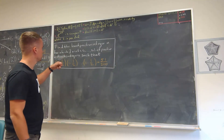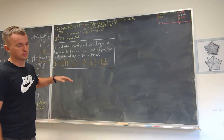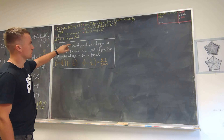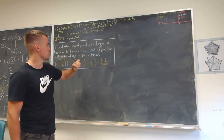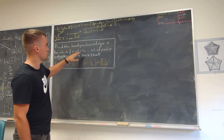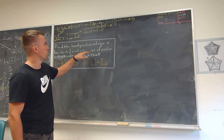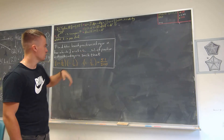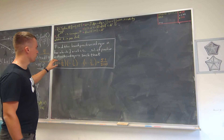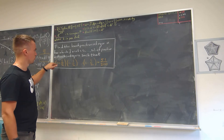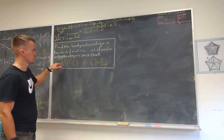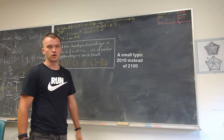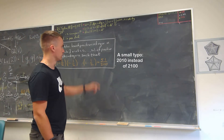Hello guys, so in this video I want to do this Olympiad problem where we need to find the least positive integer n such that if you're going to take a set of positive distinct integers s1 up to sn, then the following product where we have 1 minus 1 over s1 and etc. is going to be equal to 51 over 2100.